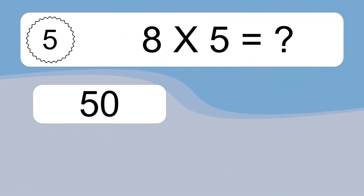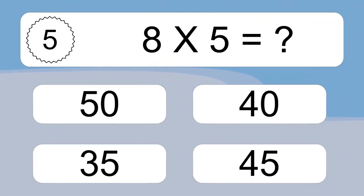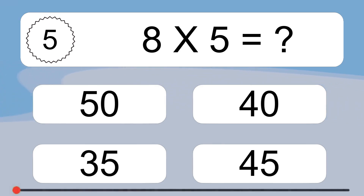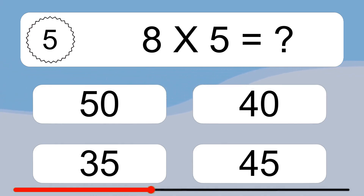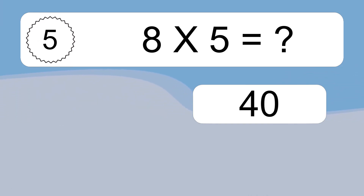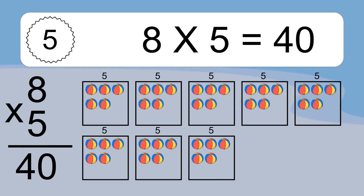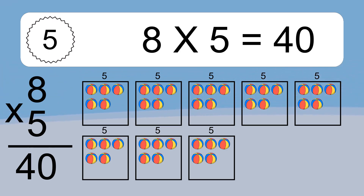Eight times five equals what? Eight times five equals 40. We have eight boxes and each box has five colorful balls inside. If you count all the balls in all the boxes together, you will have eight times five balls. This equals 40 balls.